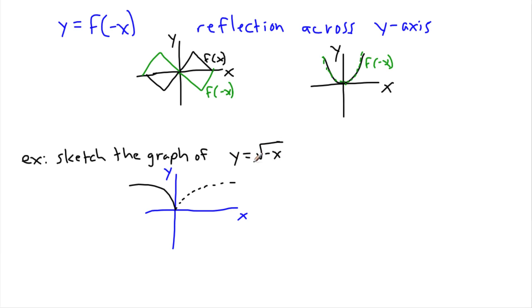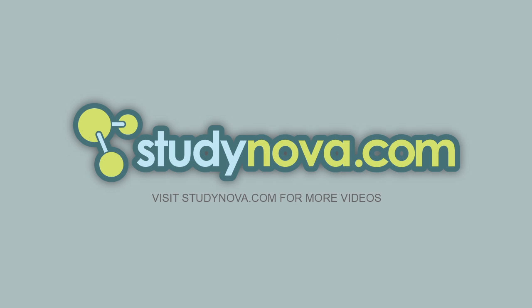So you can take lots of different graphs, and as long as you understand the parent function, you can do all sorts of cool stuff — like translating things, stretching and squishing them, or even reflecting them. Those are actually quite useful, because then you don't always have to use your calculator to figure out what graphs look like. As long as you have an idea of what it starts out as, you can always just pick it up and move it, stretch it, squish it, reflect it — anything you feel like.